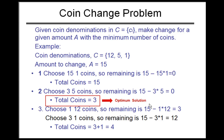Another option is to take three five-dollar coins and make fifteen dollars that way. Or you could use one twelve-dollar coin and three one-dollar coins — four coins total. But three five-dollar coins is only three coins, so that is the optimal solution in this case.